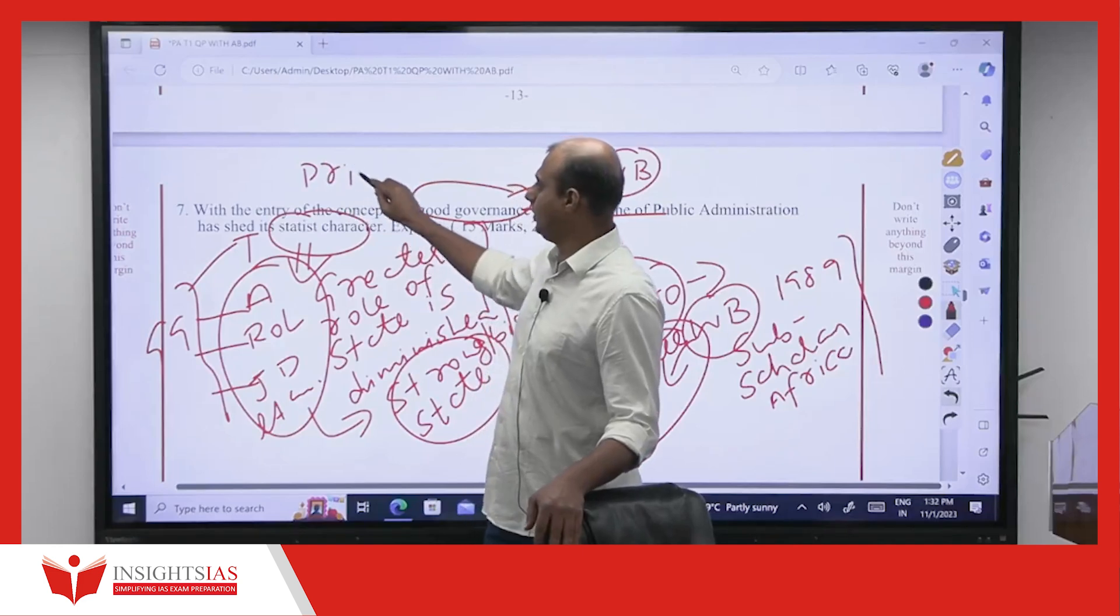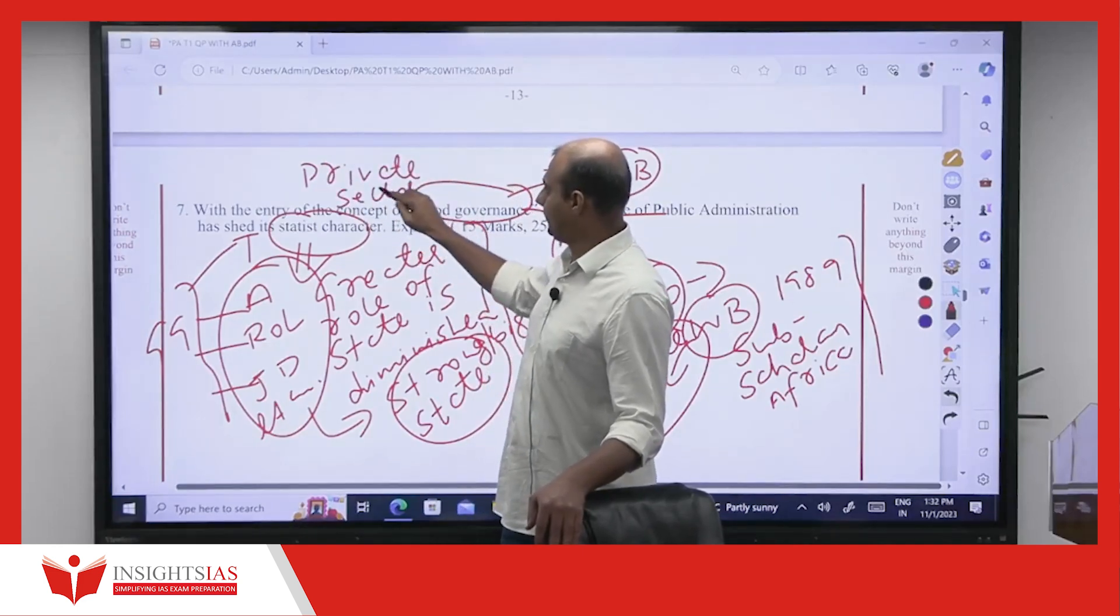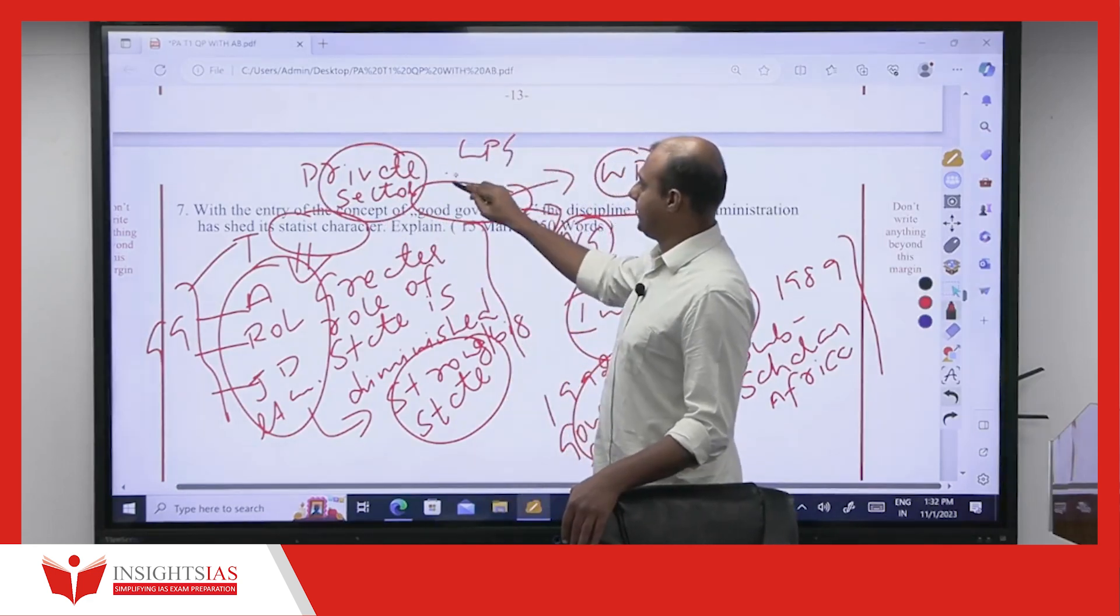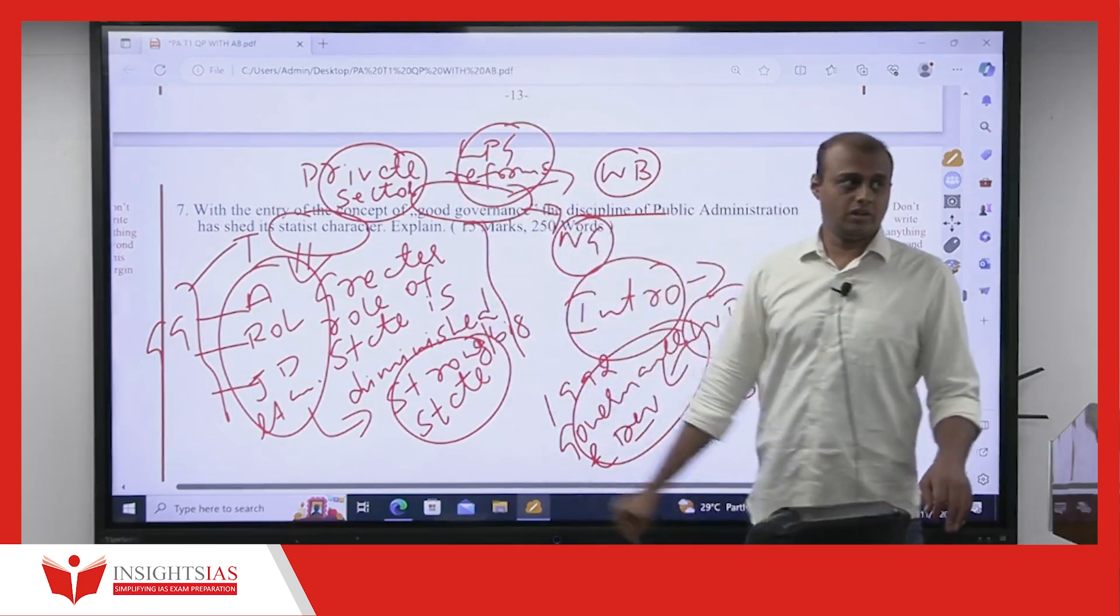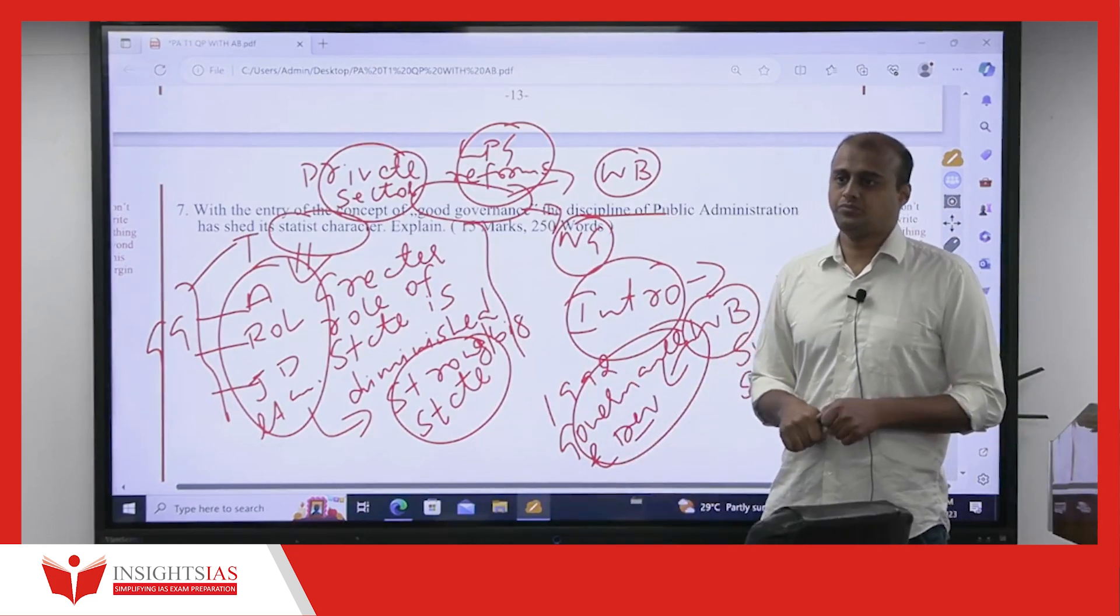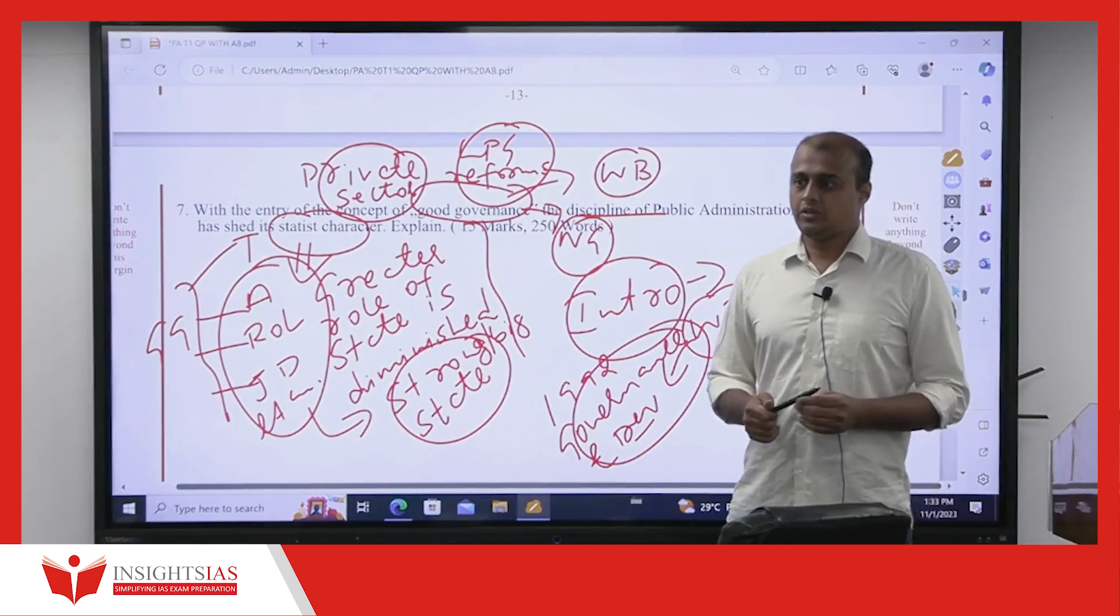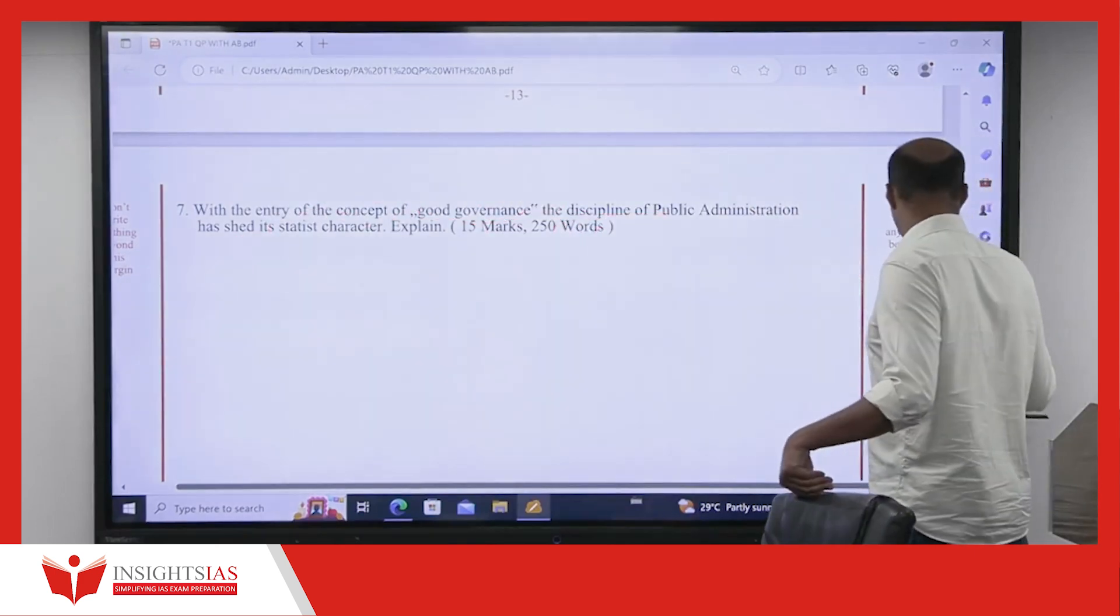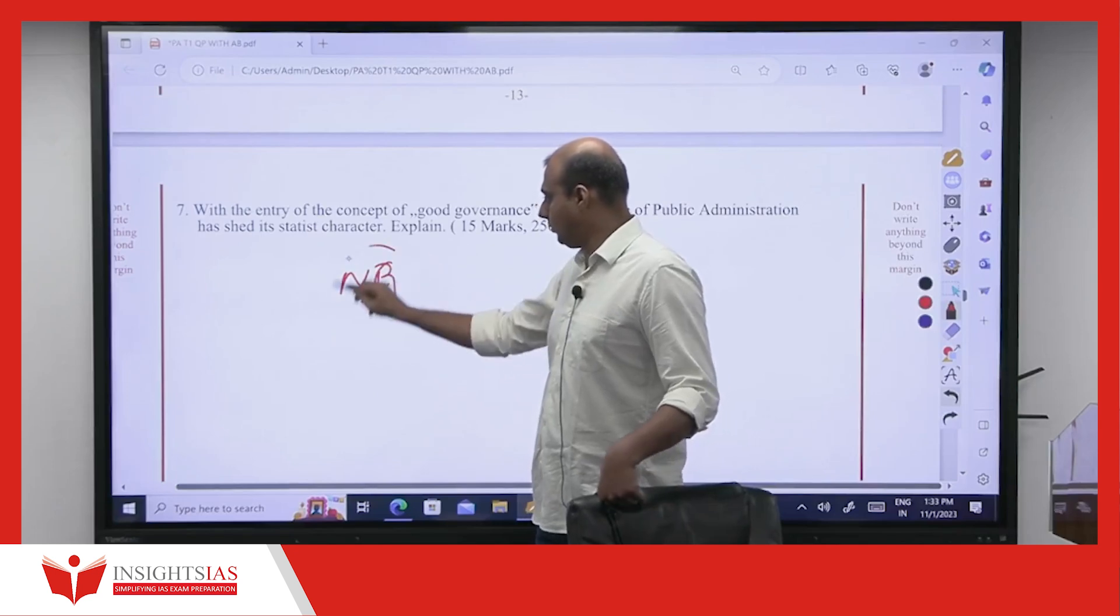Gradually, who started to play a greater role? Private sector started to play a greater role. This is also reflected in India's LPG reforms. Private sector started to play a greater role. It is reflected in even India's LPG reforms. Now, that itself took another turn, which is called what? Gradually, the idea of network governance evolved.